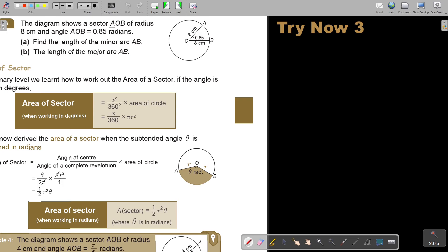The diagram shows the sector ALB of radius 8 cm and angle ALB is 0.85 radians. Find the length of the minor - now, the minor was the small one.